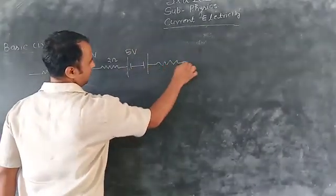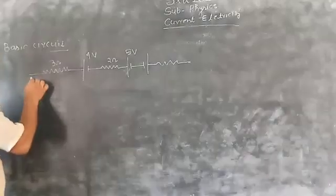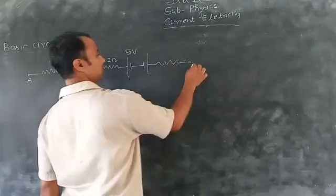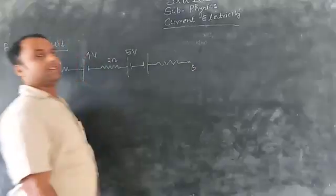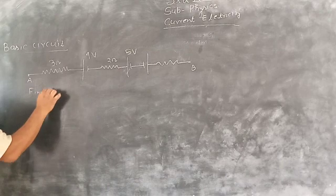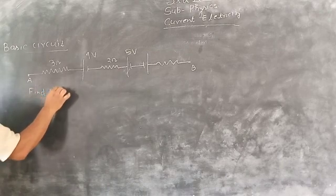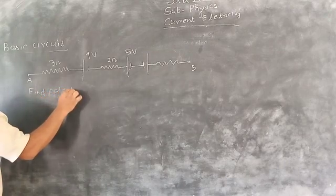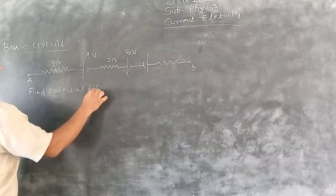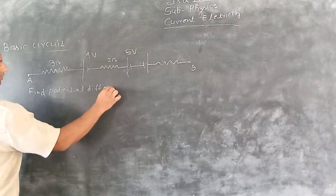This is also a resistor. This is 1K, and this is 22. Let's start — 1K, this is 1K — yes, it is 3 ohms. This is 1K, 3 ohms.